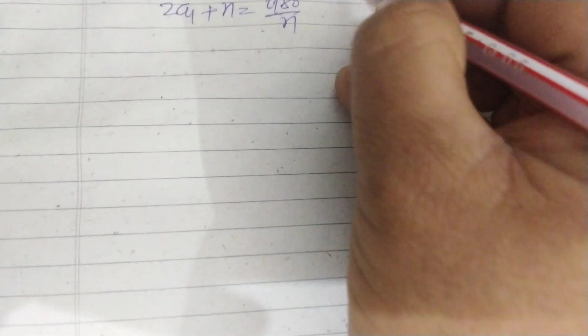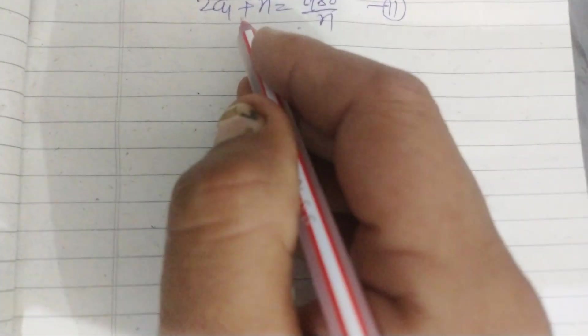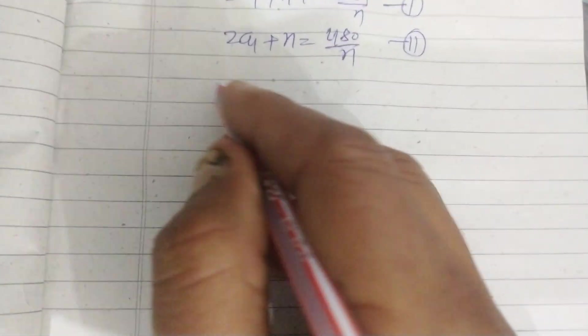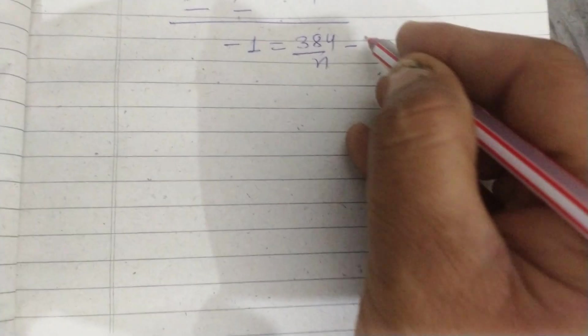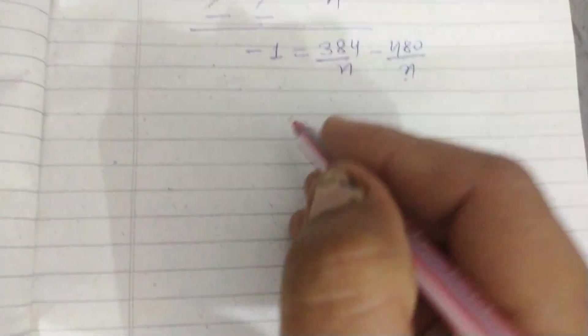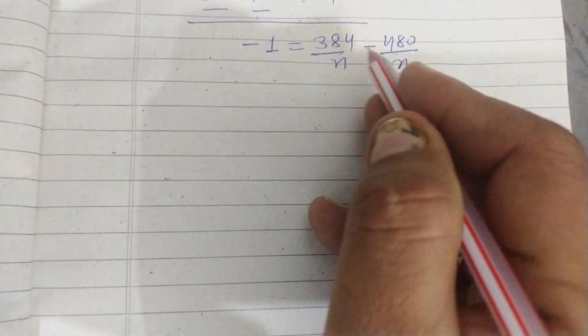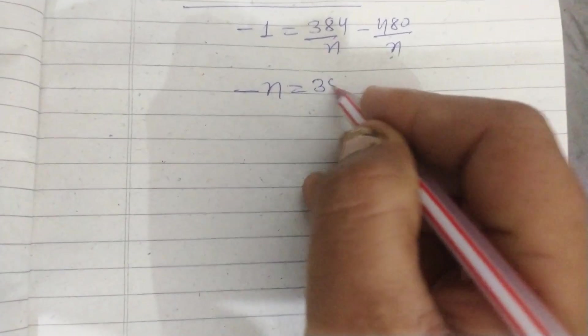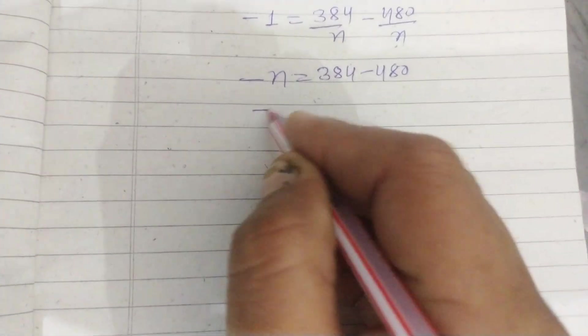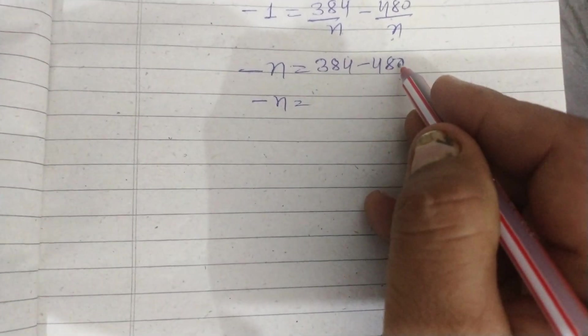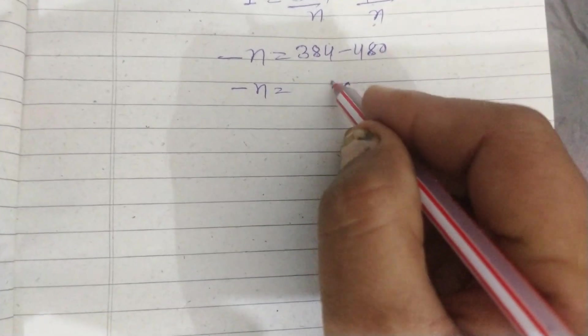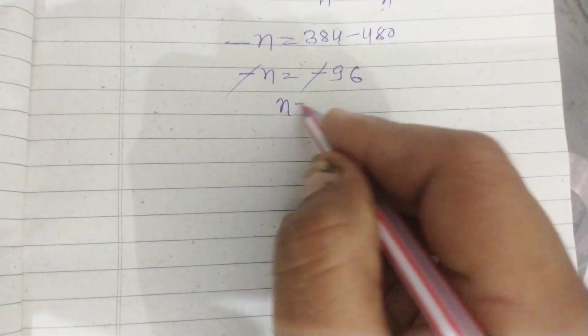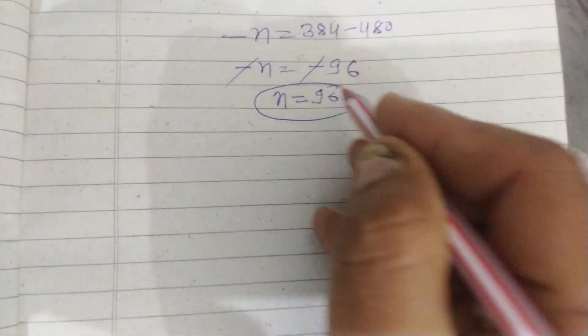Subtracting these equations, the 2a1 plus n terms cancel and we get minus 1 equals 384 upon n minus 480 upon n. When we multiply all three terms by n, we get minus n equals 384 minus 480. This is minus 96, so n equals 96.